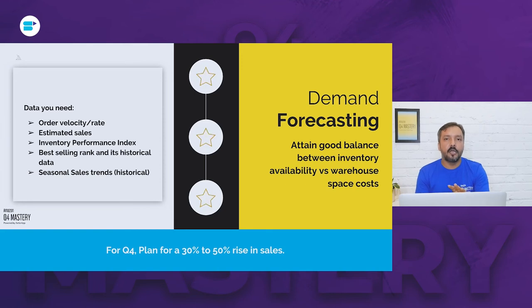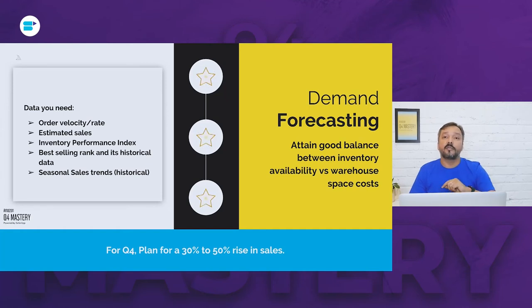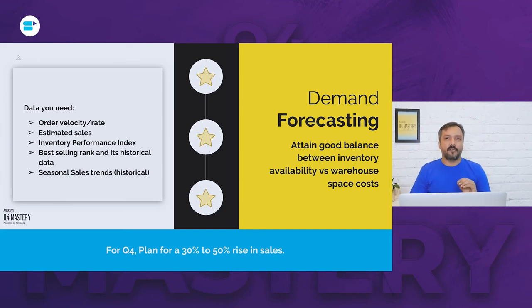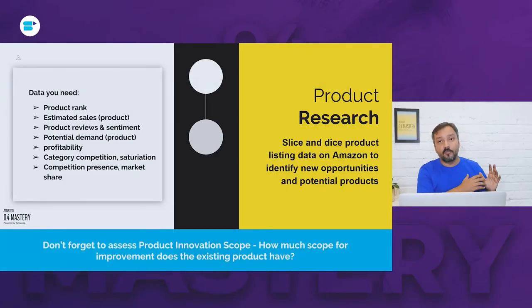The eighth area is demand forecasting, which is essentially about managing your inventory — balancing between high order rates and high storage fees. The pandemic has pushed sellers to stretch their entire inventory pipeline from manufacturing to marketplace warehouses. You need estimated sales, total number of orders, order velocity, and historical trends to forecast how much product to ship to Amazon. Every Q4 planning strategy should also consider new product launches.